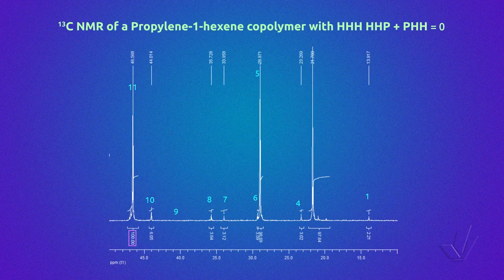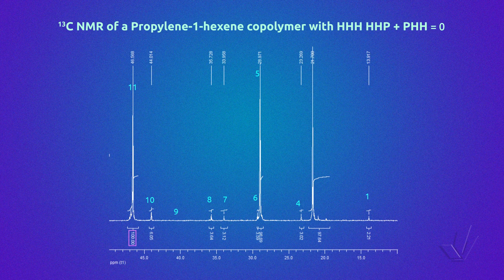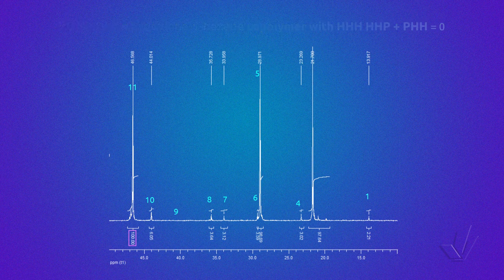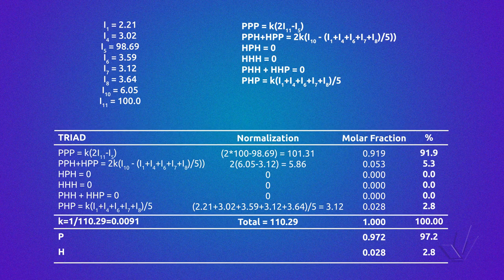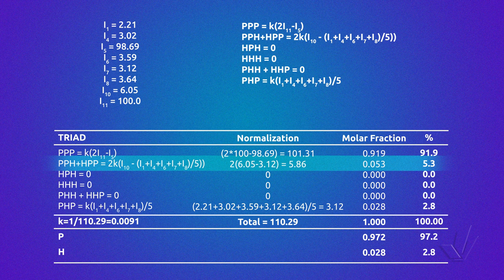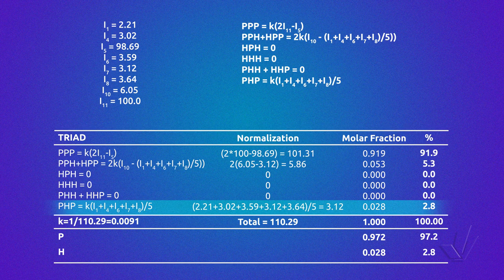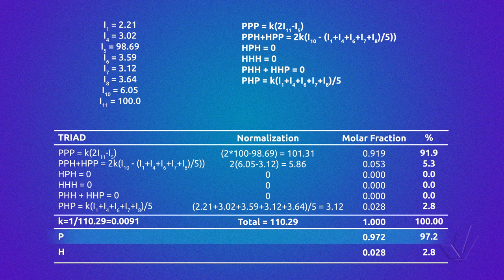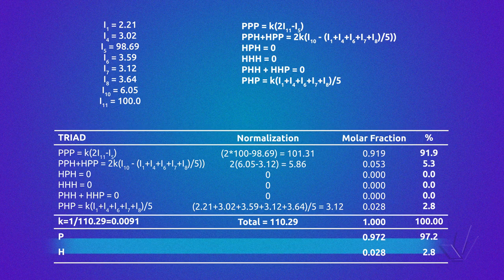Here we have another propylene-1-hexene copolymer carbon-13 NMR spectrum where peak 9 is 0. That means that triads HHH, HHP and PHH do not exist, and we can also suppose that HPH is also inexistent. We use the equations determined previously with the integrals of the corresponding peaks. We have a copolymer with 91.9% of triads PPP, 5.3% of triads PPH plus HPP, and 2.8% of triads PHP. The amount of each monomer, calculated by the sum of the triads centered in each monomer, gives a copolymer with 97.2% of propylene and 2.8% of 1-hexene.